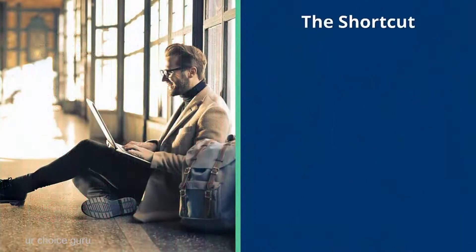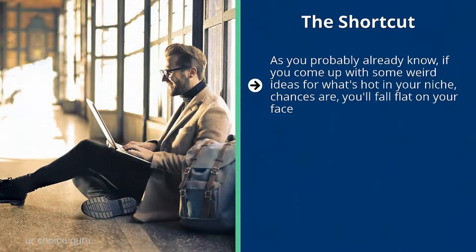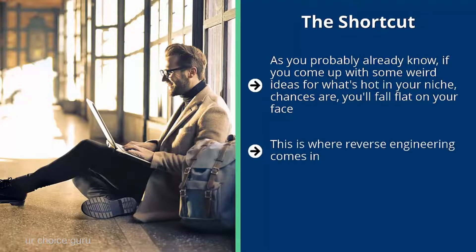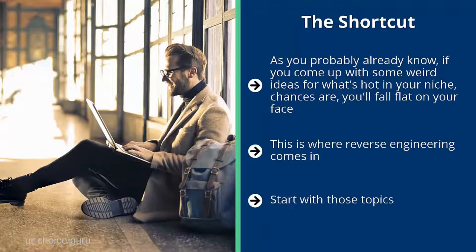That's how you build an empire — quality over quantity. As you probably know, if you come up with ideas for what's hot in your niche, chances are you'll fall flat on your face unless you have a mental connection with your target audience. This is where reverse engineering comes in. Study your competitors and look at their most successful pieces of content — the ones with amazing levels of engagement. Start with those topics, pay attention to patterns and themes, collect them, and then start with curation.